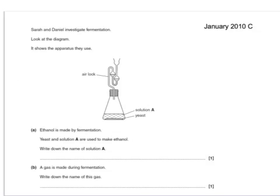Sarah and Daniel investigate fermentation. Look at the diagram. It shows the apparatus that they use. Ethanol is made by fermentation. Yeast and solution A are used to make ethanol. Write down the name of solution A. Well, that would be a sugar solution. Probably also allow glucose solution or another form of sugar. A gas is made during fermentation. Write down the name of that gas. That would be carbon dioxide.